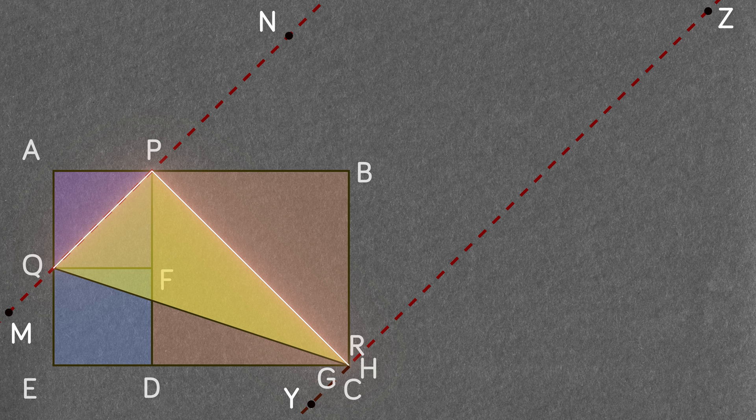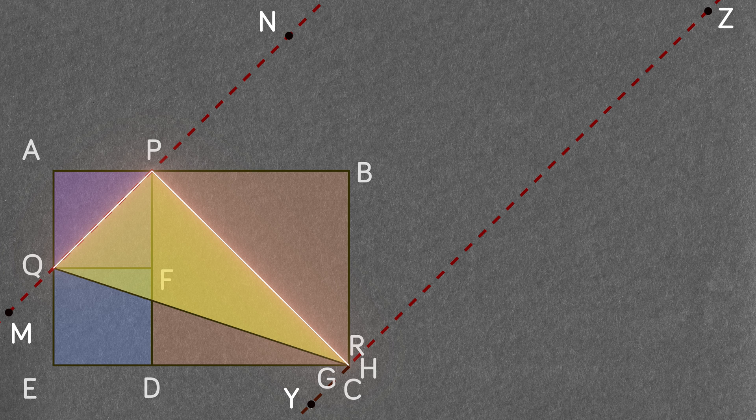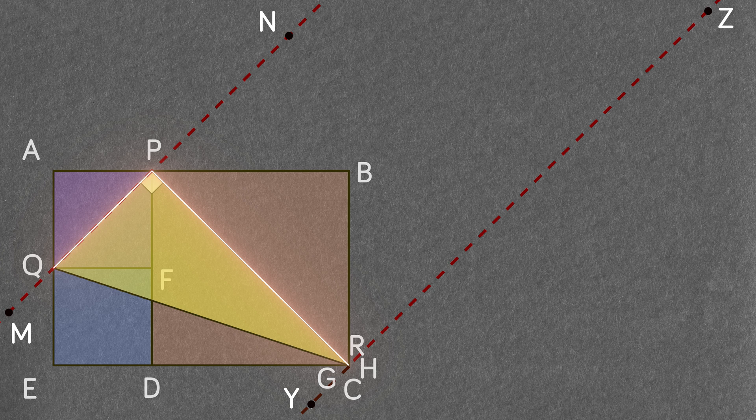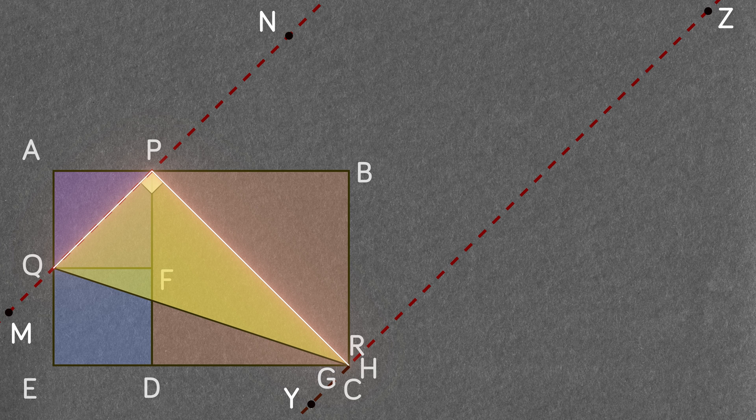So line PR is now the diagonal of the square PBCD. Here, angle QPR will be 90 degrees, therefore the height of the triangle PQR given by PR will be equal to the diagonal of the square PBCD.